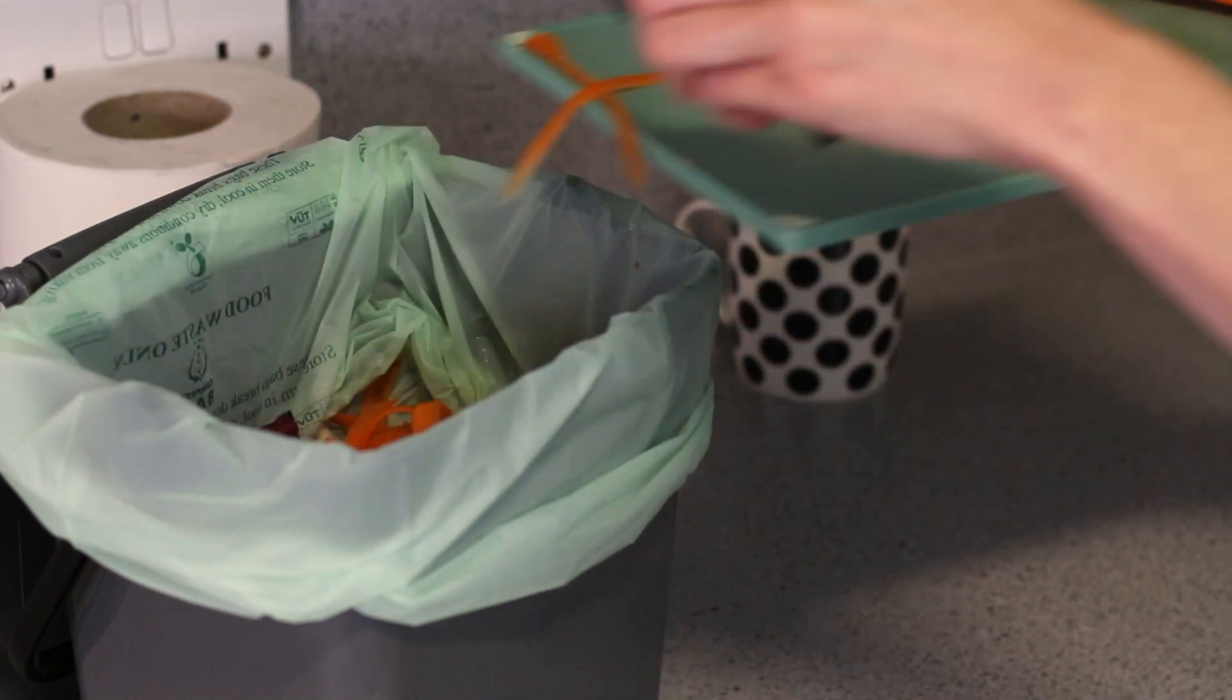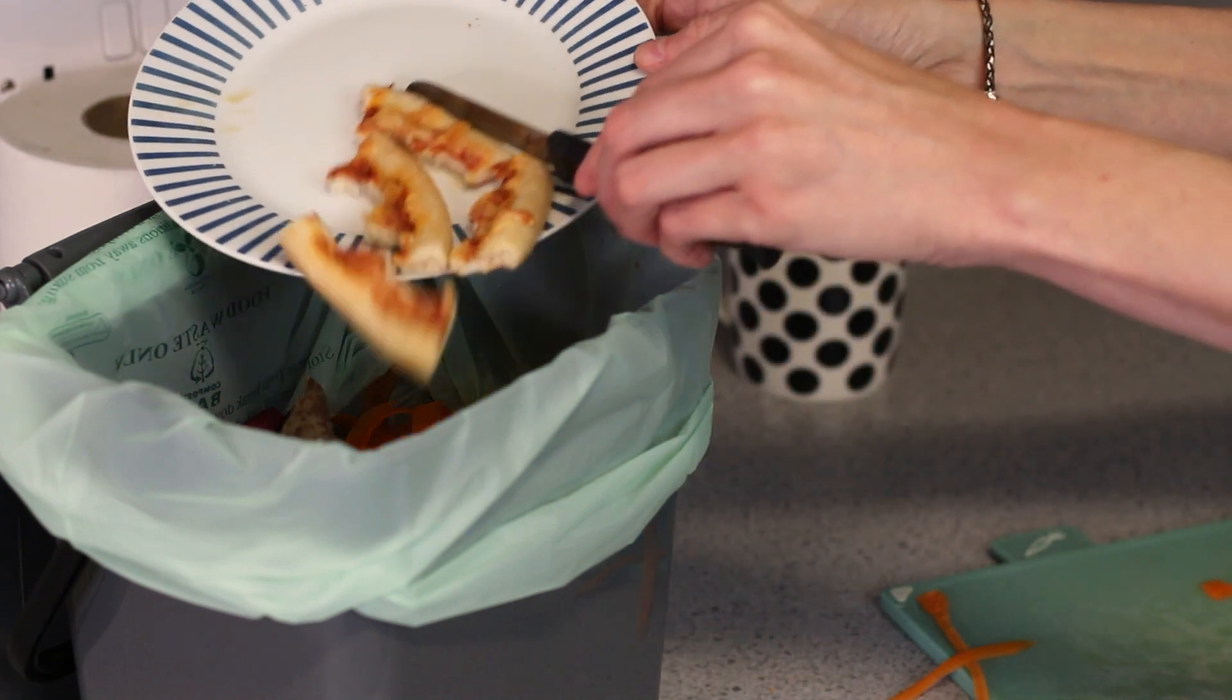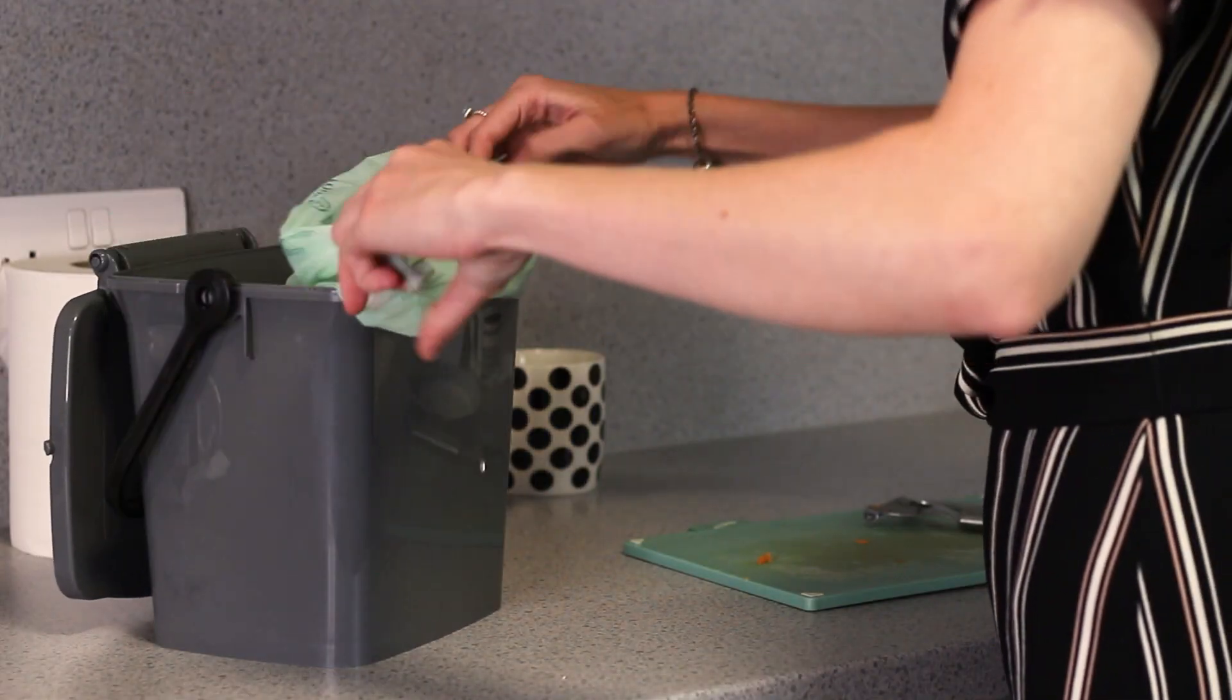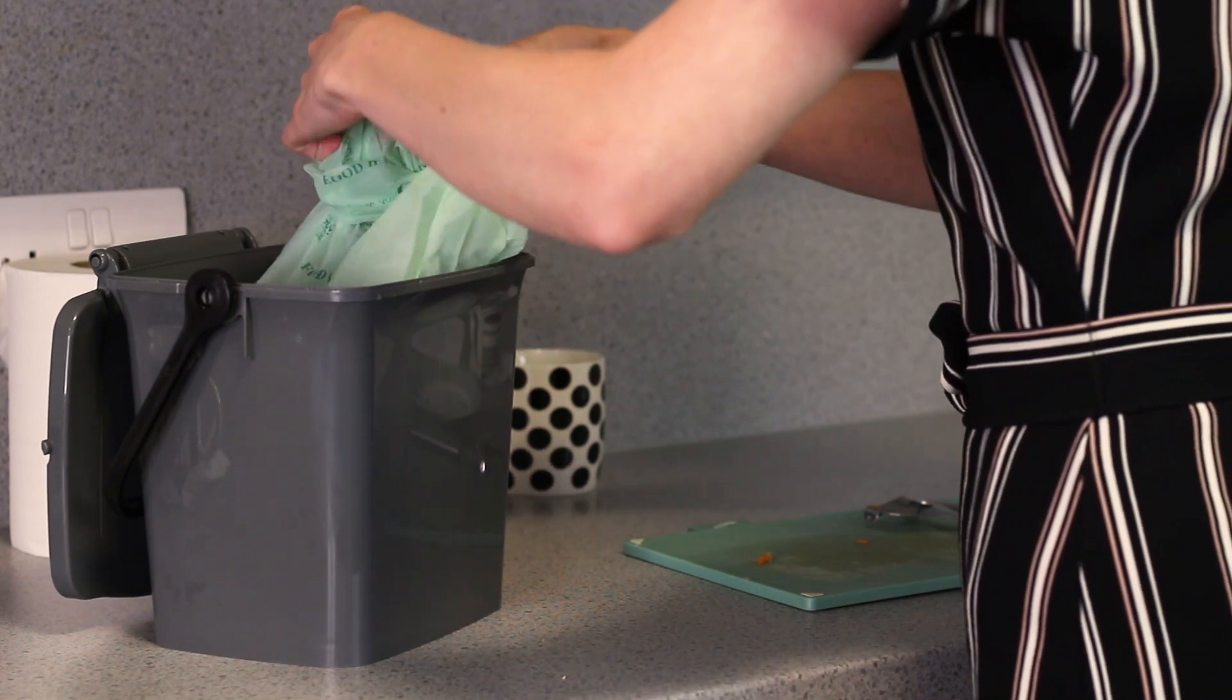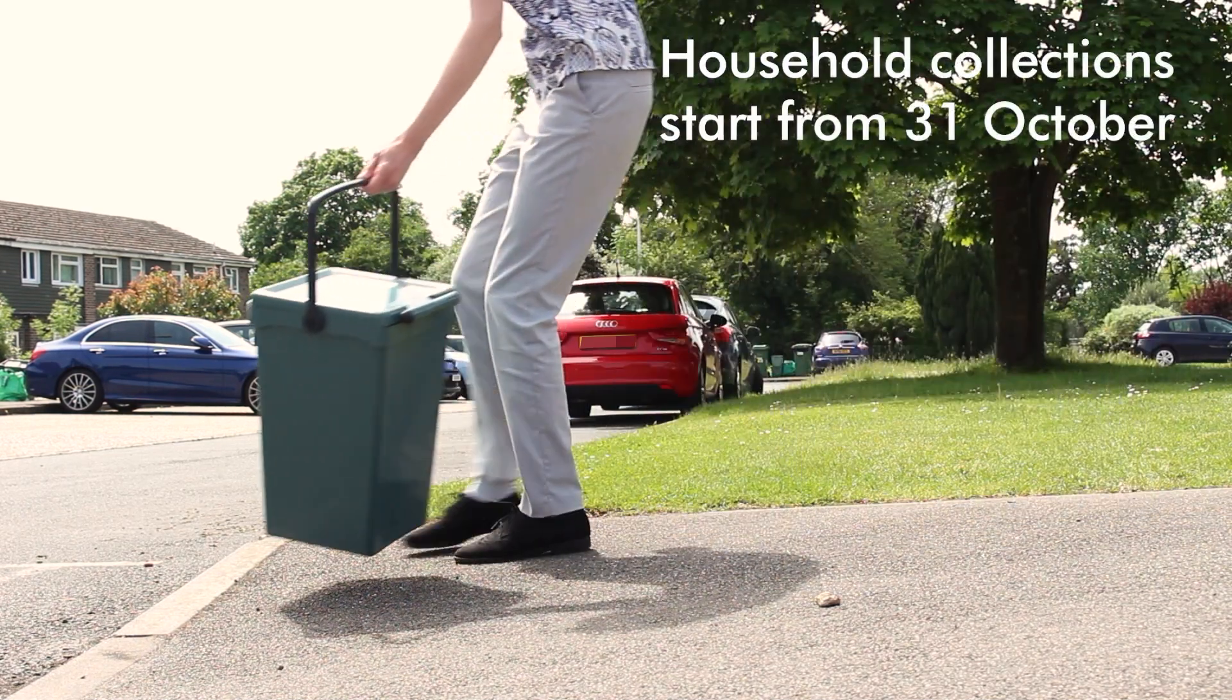Examples include vegetable peelings, fruit, tea bags, and coffee grounds. Please remove any packaging before disposal. Once the caddy is three quarters full, tie the bag and place it in the outside food waste caddy. Put the outside food waste caddy out for collection every week with your black bin or recycling.